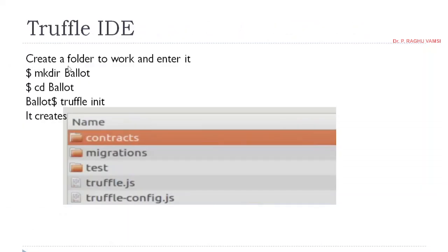Whenever we go for creating a folder to work with, let's see a ballot folder — a ballot smart contract. To create the ballot smart contract or ballot blockchain project: mkdir ballot, go to the ballot folder with cd ballot, and type truffle init. This will initialize the project and generate folders like contracts, migrations, test, truffle.js, and truffle-config.js, which are the folders generated automatically whenever we run truffle init.